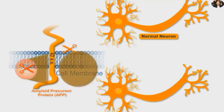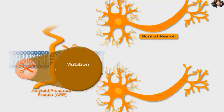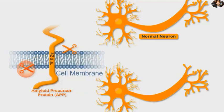However, sometimes and for unknown reasons, a mutation occurs in the gamma secretase enzyme. This mutation results in the production of 42 amino acid peptide fragments.